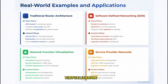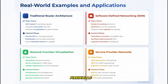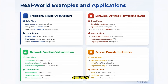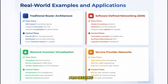Network Function Virtualization, or NFV, is another interesting application. Here, network functions like firewalls or load balancers that were traditionally implemented in hardware are now virtualized and can run on standard servers. The control plane manages these virtual functions — deciding where they should be deployed and how traffic should flow through them — while the data plane handles the actual traffic processing.